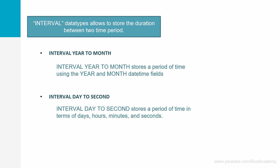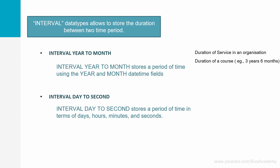Here are a few scenarios where interval data types can be used: representing the duration of service in an organization, the duration of a course such as a three-month or one-and-a-half-year course, the duration of a project, a rental agreement, a loan tenure, or an online subscription. Generally these have a start time and end time, and we say the subscription is valid for a certain number of years and months. Whenever we want to represent a duration, we can use this interval data type.